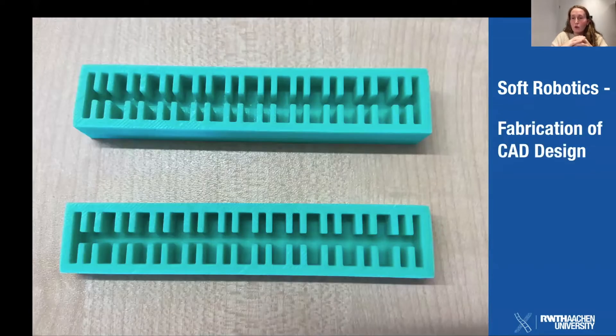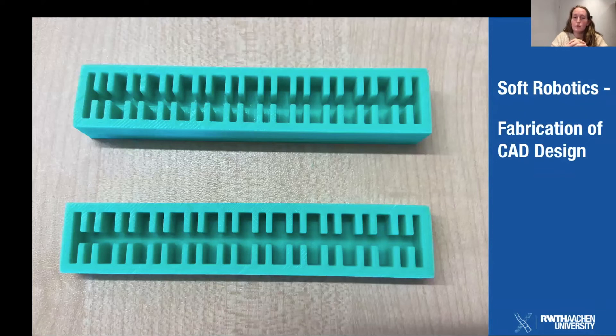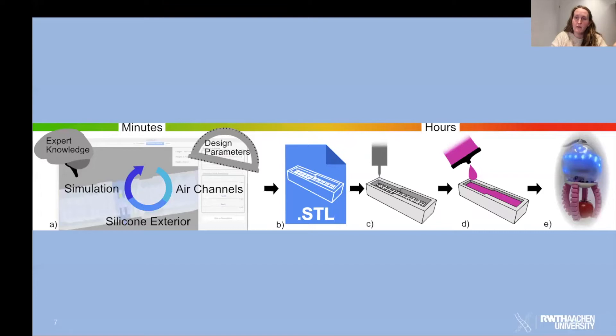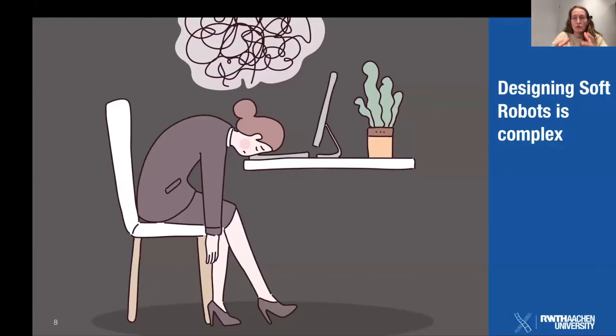Afterwards, the resulting mold is 3D printed and silicone rubber is used to cast the soft robot. This full design and fabrication process can take up to two days, and only then can you test whether the robot moves as intended. This is very slow and frustrating, and it makes it very hard to develop a feel for how the design parameters affect the actuation in the end.